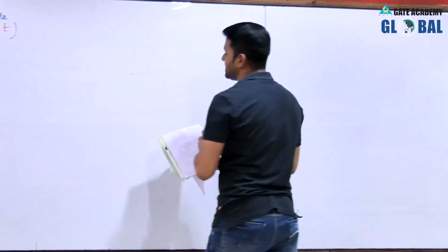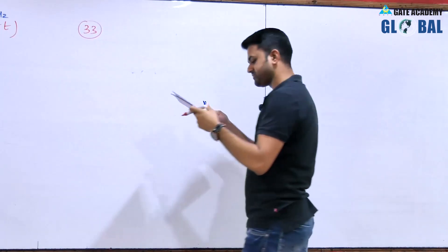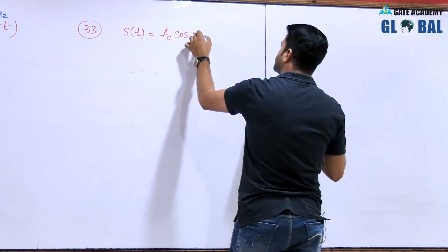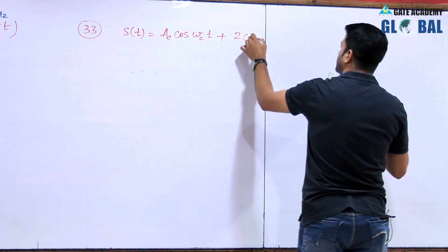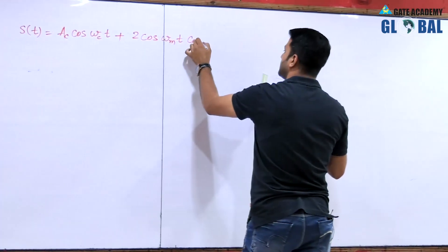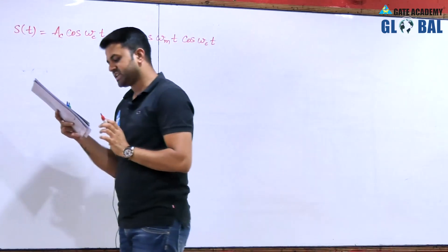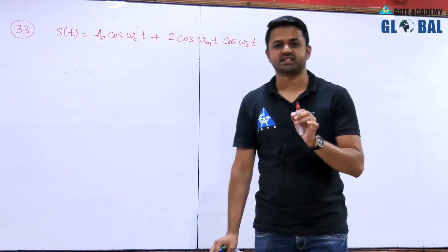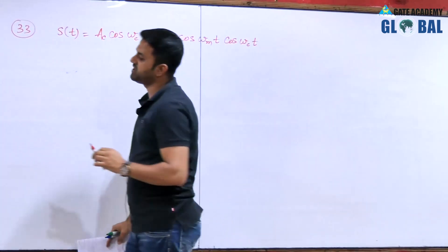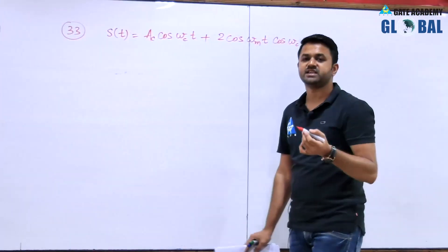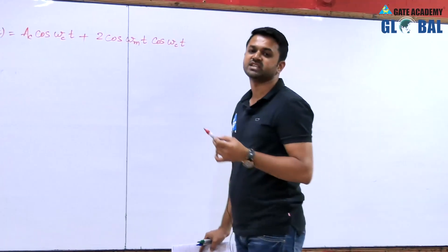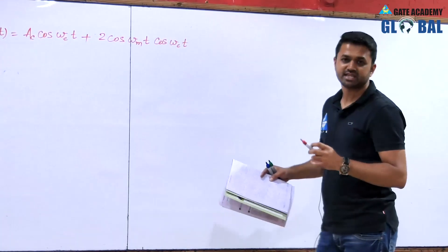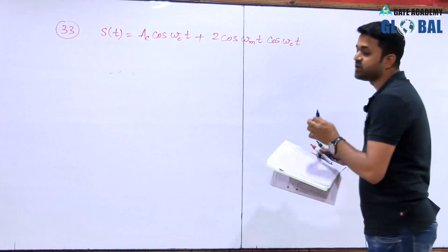Question number 33: Consider the AM signal given as ac·cos(ωc·t) + 2·cos(ωm·t)·cos(ωc·t). For demodulating this signal using an envelope detector, the minimum value of ac is to be found. One condition for proper envelope detection is the time constant, and another condition is the modulation index. The modulation index should always be less than or equal to 1 for proper envelope detection. Since the expression of the AM signal is given, we can find the modulation index by converting it into standard form.